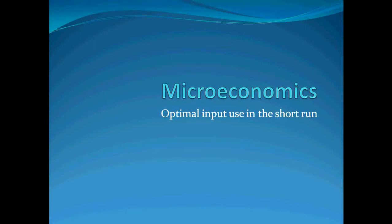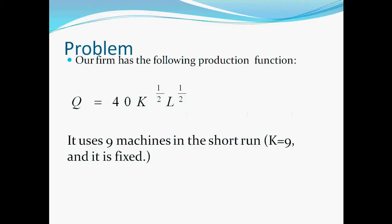Optimal input use in the short run. So we have the following production function, it is a Cobb-Douglas type with Q equals 40 times K to the one-half times L to the one-half. We know that the amount of capital that is used in the production is fixed and it is nine units.